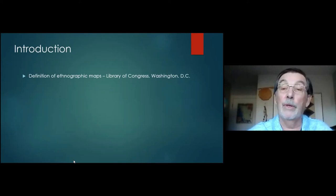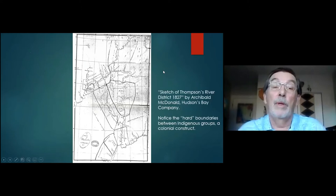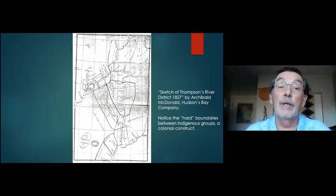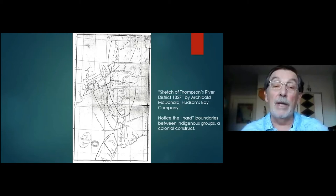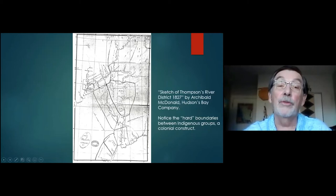This is a map showing one of the first maps of the interior of British Columbia, showing cultural groupings by Archibald McDonald. He was a factor for the Hudson's Bay Company and sketched this map in 1827. It shows the different groupings with Kamloops here in the center, if you can see my cursor.